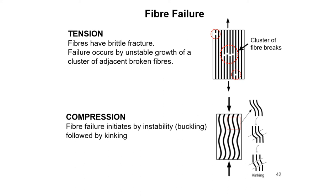The main modes of fiber failure are shown pictorially. A cluster of fiber breaks under tension is shown — fibers have a brittle structure and failures occur by unstable growth of a cluster of adjacent broken fibers. In the second picture, compression failure is shown — fiber failure initiated by instability, buckling followed by kinking.